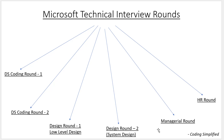In the hiring manager round, the manager takes feedback from all previous interviewers. Based on that feedback, they may probe weak areas — for example, if coding was strong but low level design was weak, the manager may ask about low level design. In 99% of cases the hiring manager focuses on design rather than coding, but coding questions are also possible.